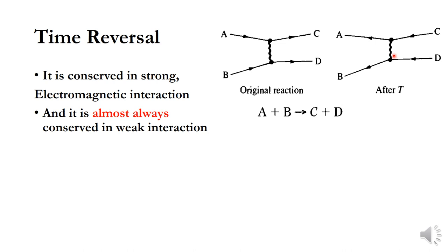In other words, T is conserved — the time reversal is conserved in this reaction. It is observed that time reversal T is conserved in strong and electromagnetic interactions, and it is almost always conserved in weak interactions. No opposite result has been observed, but it is almost always conserved in weak interactions.